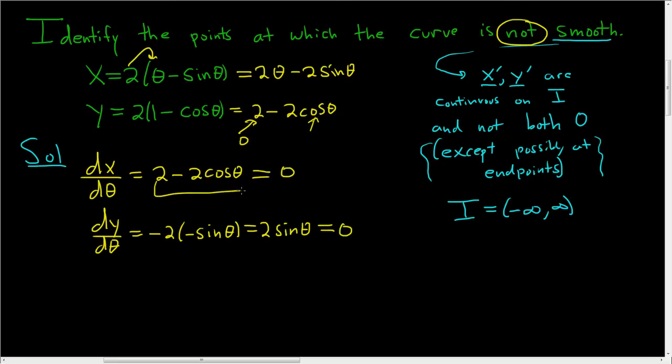The first equation can be written as cos θ = 1. How did I do that? Subtract the 2 and divide by -2. If you subtract the 2, you get -2cos θ = -2, and then you divide by -2.